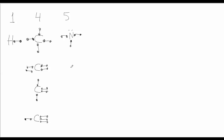Nitrogen can also form a double bond and a single bond with two lone pairs. Nitrogen brings five electrons of its own — its five valence electrons — to the sharing party.